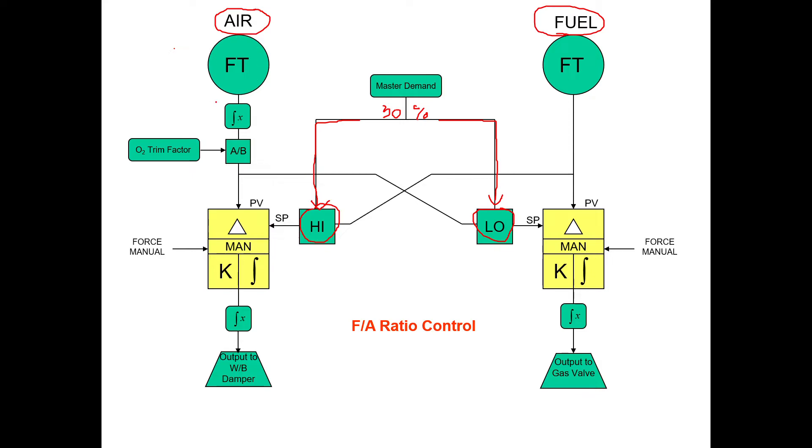As you can see, air flow is going to come through the characterizer, get characterized to match gas flow. There's a little bit of O2 trim factor applied, but let's assume O2's trim factor right now is just one. So let's say air flow is coming out at 28. The O2 trim factor is one because O2 is good, so leaving this block, the low select block is 28.